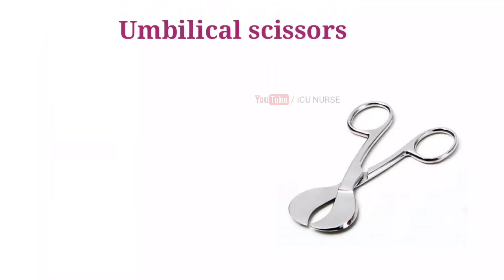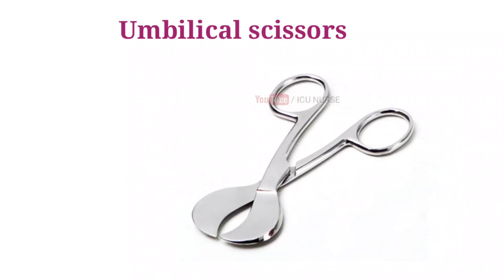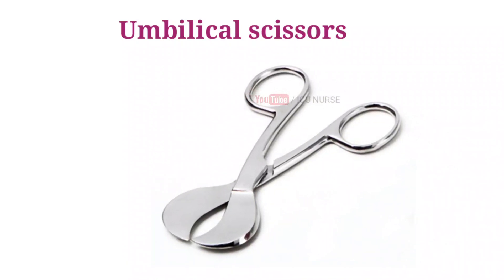Umbilical scissors are especially designed to cut the umbilical cord after delivery. These scissors are typically handheld manual instruments with two thin, very wide blades with large rounded blunt tips that slide past each other in a shearing action.